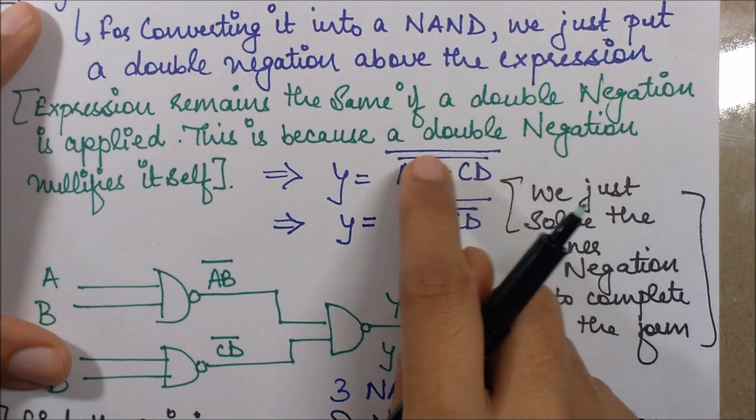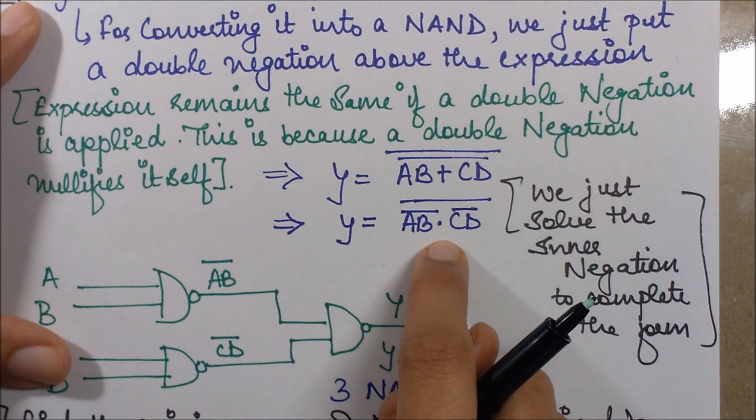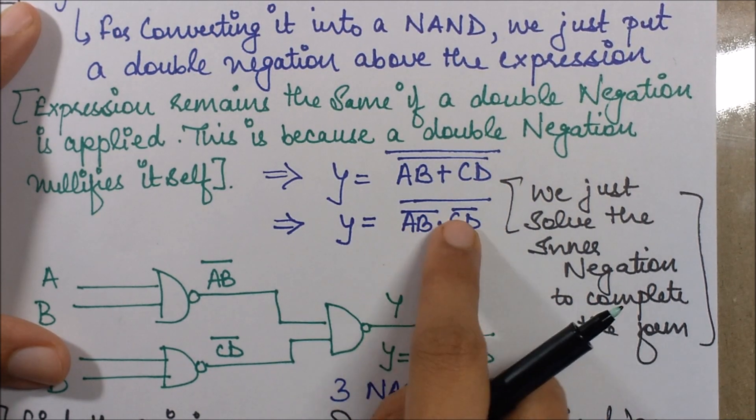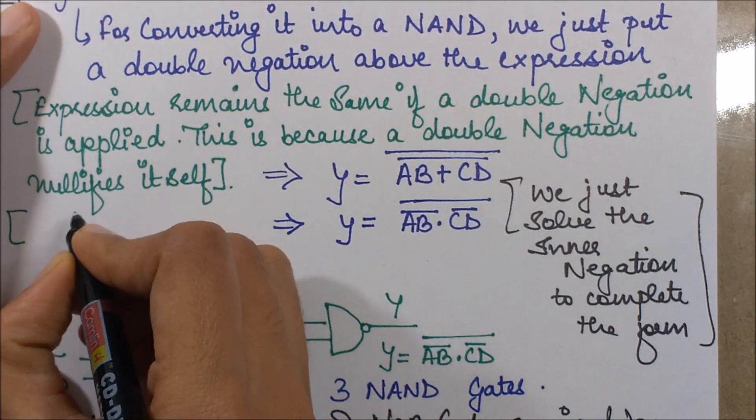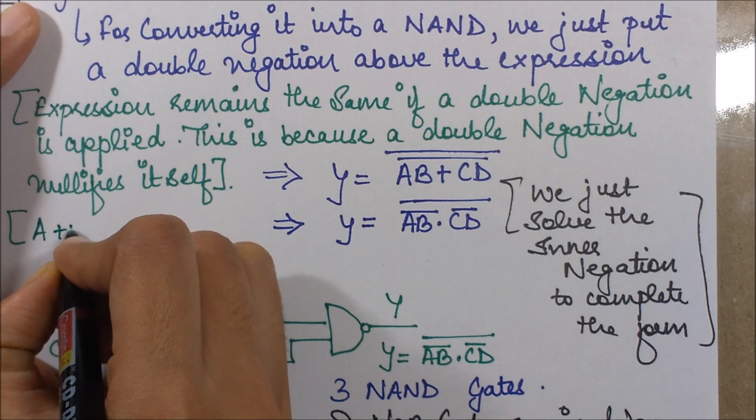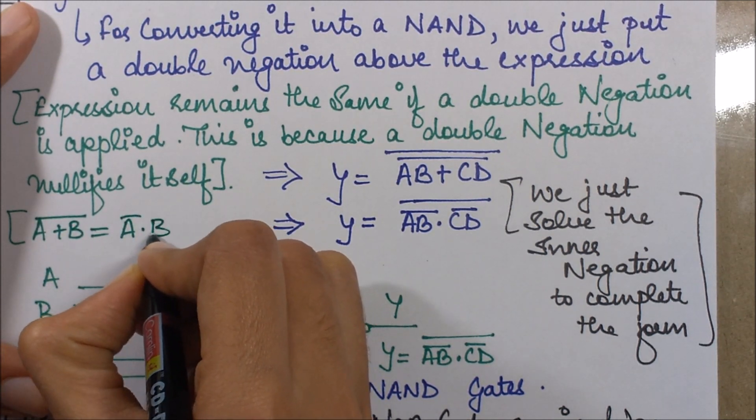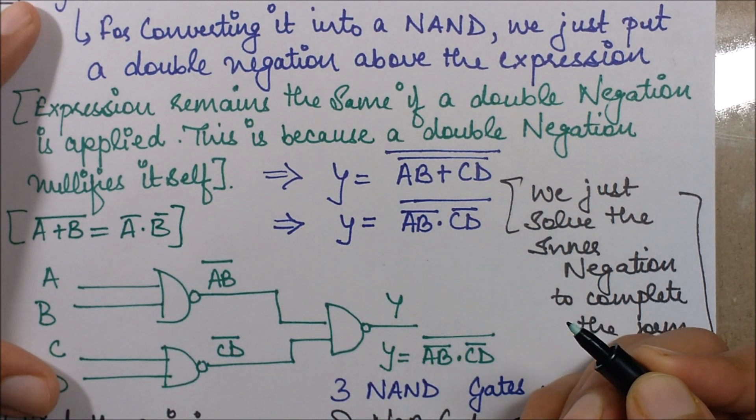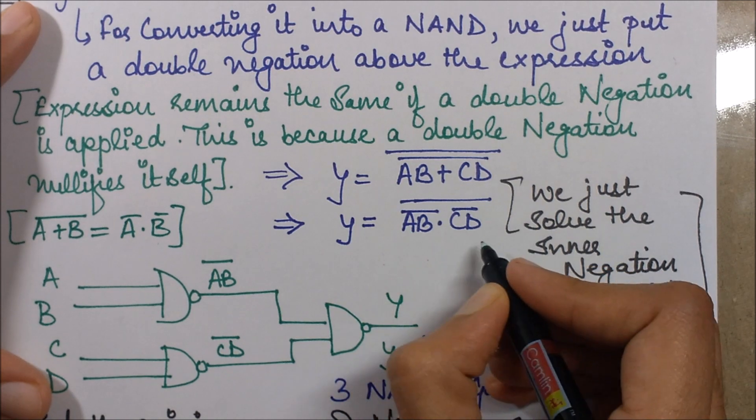So by De Morgan's, what I can do is I can just give this NOT to both of them and apply an AND in between them. So this is just De Morgan's. If I just write it down somewhere, I would say A plus B NOT equals A NOT dot B NOT. So this is the De Morgan's law basically that I've used over here. By this I get this expression.